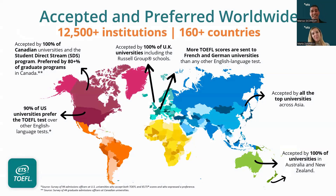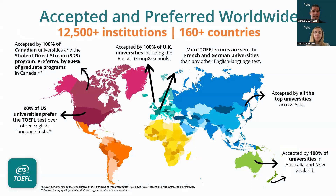The correct answer is C. The TOEFL IBT test is accepted and preferred worldwide — it is accepted by over 12,500 institutions, meaning universities, grad schools, for visa purposes, and for professional purposes in many countries, across over 160 countries around the world. One common misconception is that it's a test you only need if you're going to study in the United States. While it is accepted at 100% of universities in the US and is the preferred test for 90% of them, it is also accepted at 100% of universities in the UK, Ireland, Canada, Australia, and New Zealand.